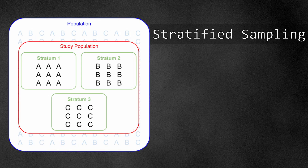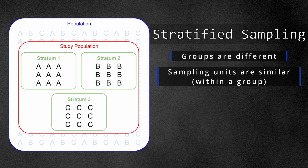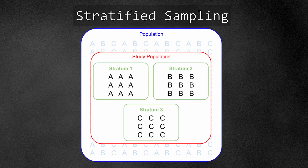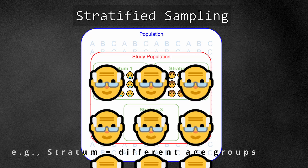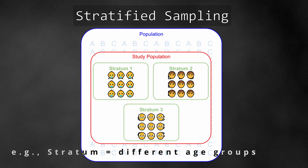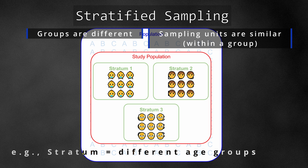Stratified sampling uses strata, which are heterogeneous groups composed of homogenous sampling units inside each stratum. For example, a stratum can be based on different age groups wherein stratum 1 is composed of all young people, stratum 2 of all middle-aged people, and stratum 3 of all old people. Each stratum is different from the other strata, but within a stratum, each sampling unit is similar to the others in relation to how each stratum was defined.